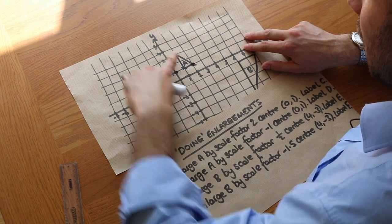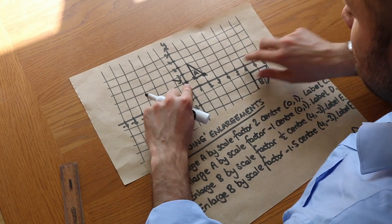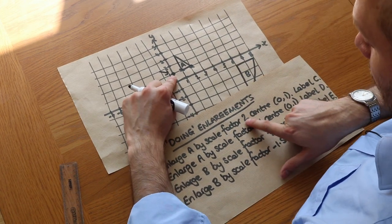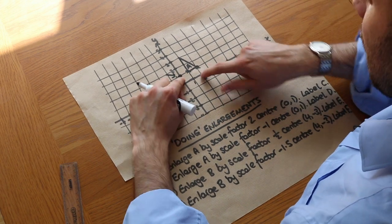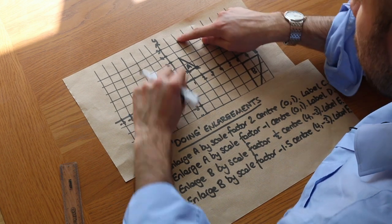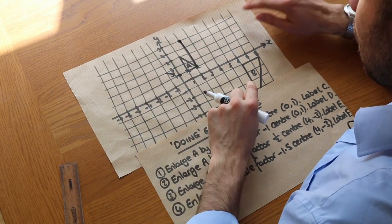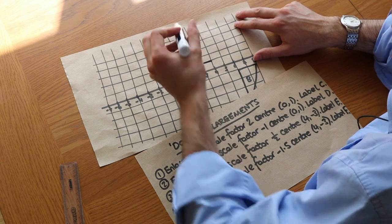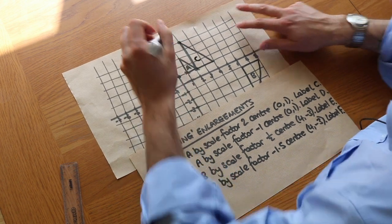What about this point at the top? Counting from the centre of enlargement, it's one right and two up. We times each of those by the scale factor 2: the one right becomes two right and the two up becomes four up, so it ends up here. We can join those up — the width of the original shape is one, so the width of the new shape will be two because the scale factor is two. We label it C.